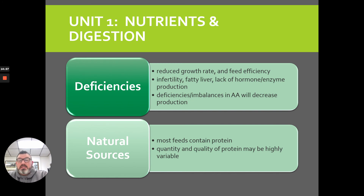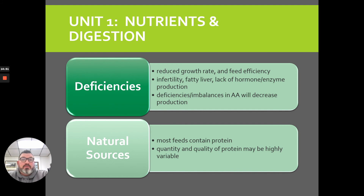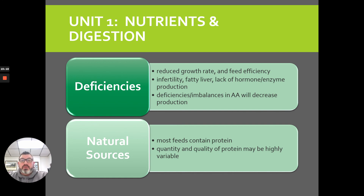Almost all feeds contain some amount of protein. Corn, for example, is typically 9% crude protein — almost every bushel would be somewhere between 8.5% and 9.2% crude protein. Alfalfa hay has a lot of variability depending on when you cut it. You might be down at 13% to 14% crude protein if it's been left long. If you harvest it right at bud stage, it might be 23% crude protein. So there's considerable variability in both quality and quantity of protein.